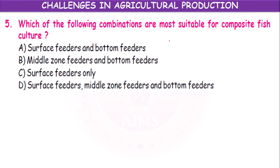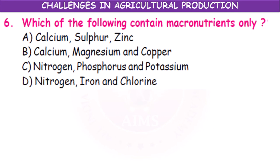Which of the following combinations are most suitable for composite fish culture? The options are: surface feeders and bottom feeders; middle zone feeders and bottom feeders; surface feeders only; or surface feeders, middle zone feeders, and bottom feeders. The answer is surface feeders, middle zone feeders, and bottom feeders — this is the most suitable combination for composite fish culture, which is a part of aquaculture. Which of the following contains macronutrients only?